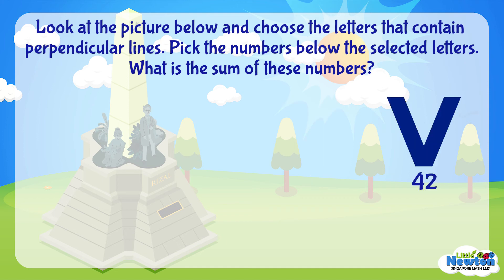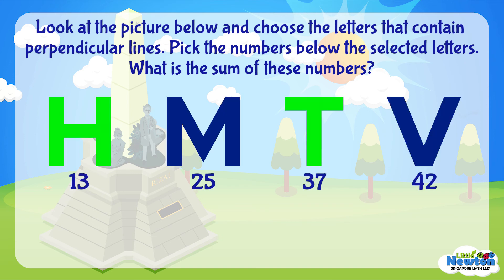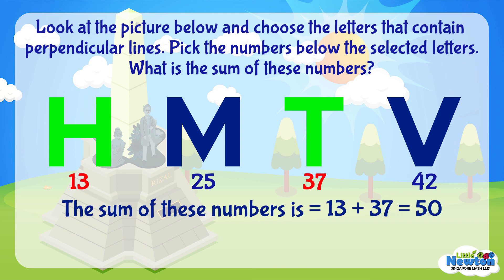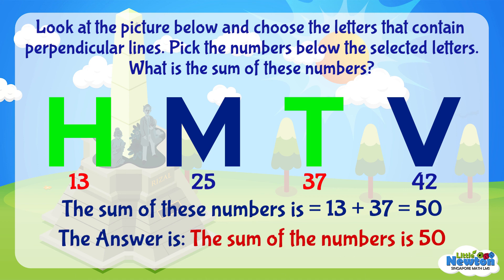Finally, what about letter V? Does V have perpendicular lines? No, it does not. Now we know that the letters H and T both have perpendicular lines. Pick the numbers below the selected letters. What are the numbers under H and T? The numbers 13 and 37 are under letters H and T respectively. Thus, the sum of these numbers is equal to 13 plus 37 equals 50. Hence, the sum of the numbers is 50.